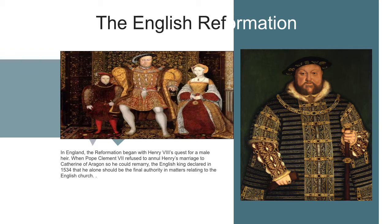In 1534, Parliament named Henry head of the Church of England. This was the beginning of the Anglican Church. This quarrel with Rome was political, not religious. The Anglican Church did not start as a Protestant church, and Henry certainly didn't regard himself as a Protestant. However, the Protestant movement in Europe was growing very strong at this time. When Henry quarreled with Rome and ordered the Bible to be translated into English, the way was open for Protestantism to spread in England.